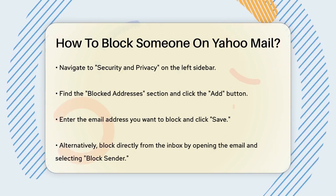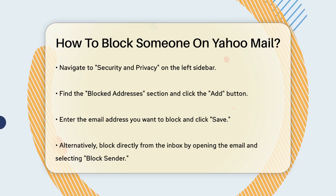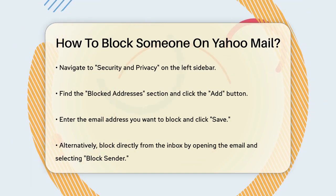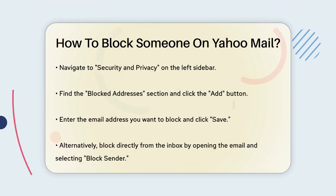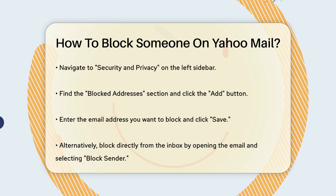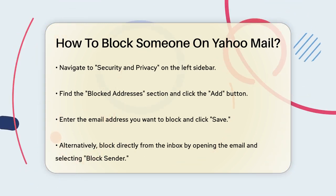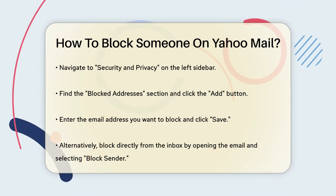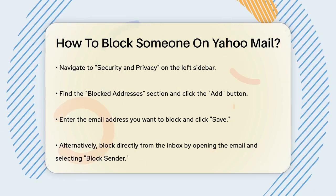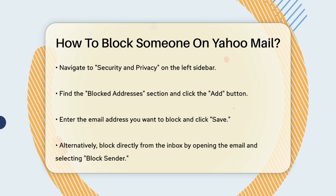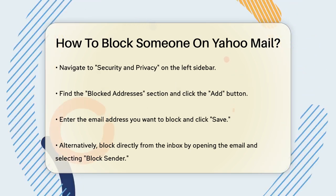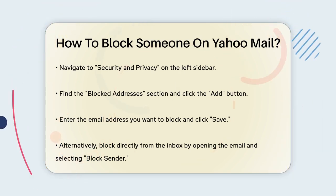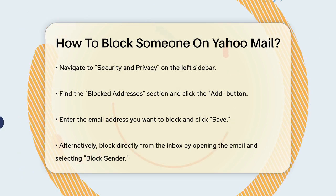Alternatively, you can block an email directly from your inbox. Open the email you want to block, click on the three dots at the top of the email, and select Block Sender. You'll be given options to delete all existing emails from this sender and to move all future emails to the spam folder. Check the relevant boxes and click OK to confirm.